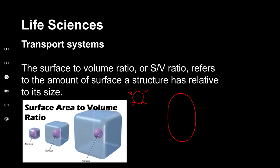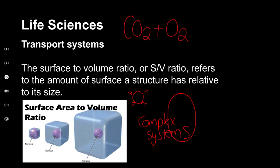But the larger something is, we're going to need more of it, and that actually means that we're going to need more complex systems. So if I'm looking at my transport system, the most important thing is I want to get oxygen and carbon dioxide into and out of my body. For a really simple unicellular organism, oxygen can go in and carbon dioxide can go out — simple diffusion.